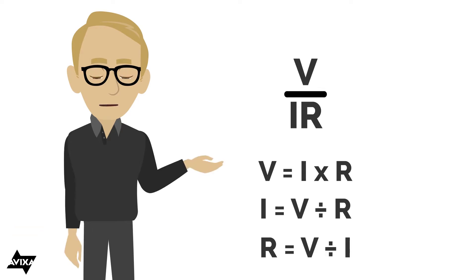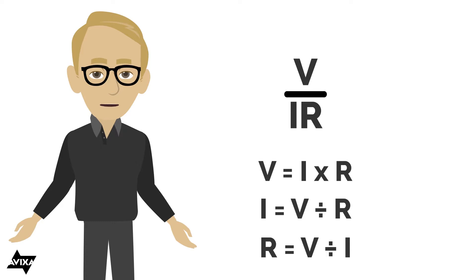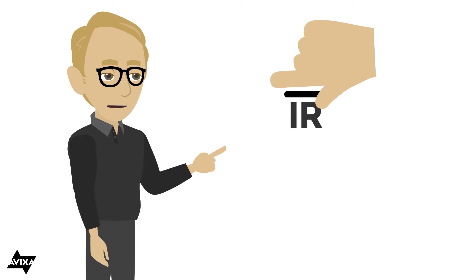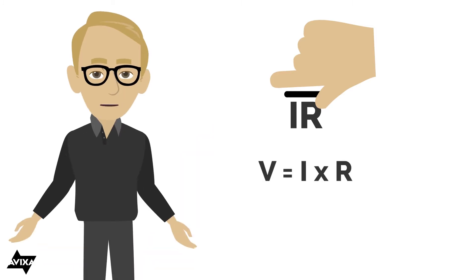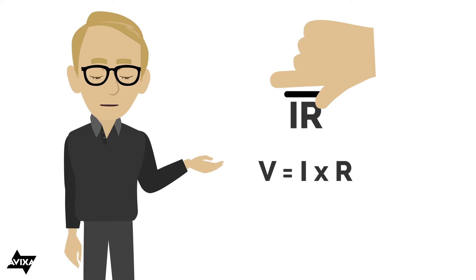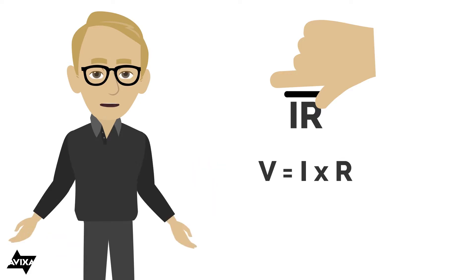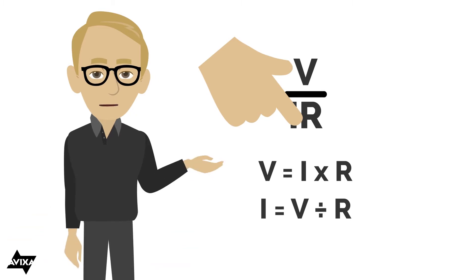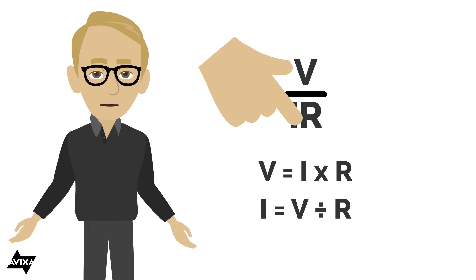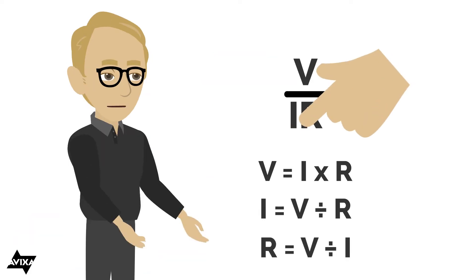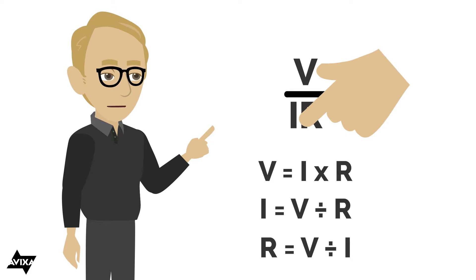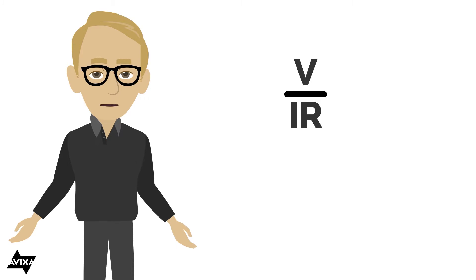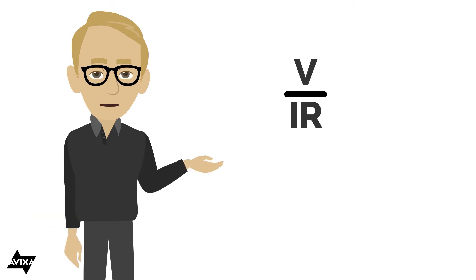The way that we do this is I'm going to put my finger over the value that I want to solve for. So let's say I want to solve for voltage — I put my finger over the V, and that looks like I times R, current times the resistance. If I want to solve for current, I put my finger over the I, and that looks like voltage divided by resistance. If I want to solve for the resistance, I put my finger over the R, and that gives me voltage divided by current. So if you can remember V-I-R, just put your finger over the value you want to solve for.